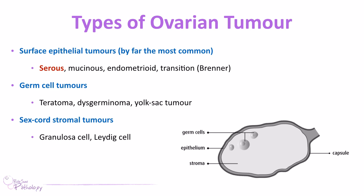We can also have metastatic tumours in the ovary. One of the most common is called a Krukenberg tumour, which usually originates from the upper GI tract — typically gastric in origin — and has a quite characteristic microscopic sign: signet ring cells on microscopy.